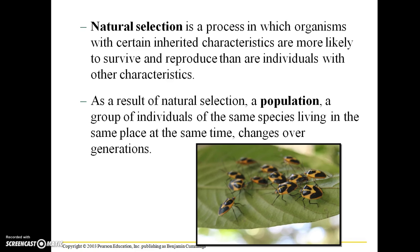Natural selection is a process in which organisms with certain inherited characteristics — characteristics that have a genetic basis — are more likely to survive and reproduce than are individuals with other characteristics. As a result of natural selection, a population, which is a group of individuals of the same species living in the same place at the same time, changes over generations. Basically, populations change over time due to varying selective pressures.